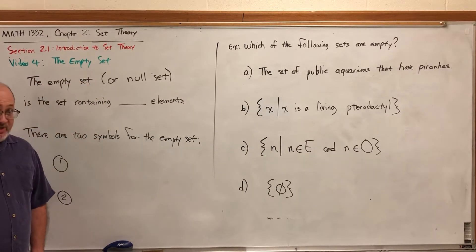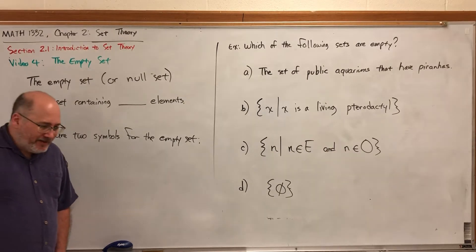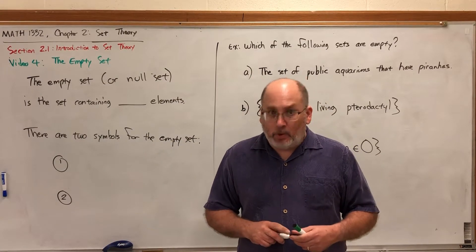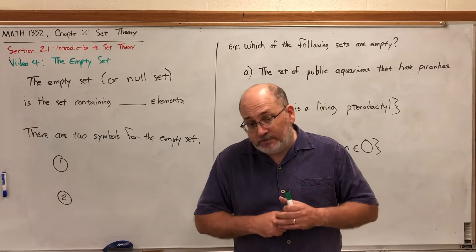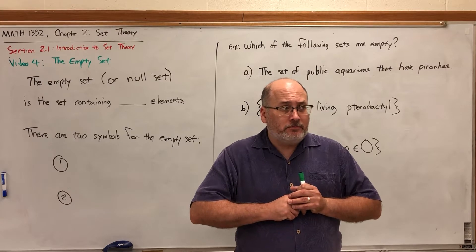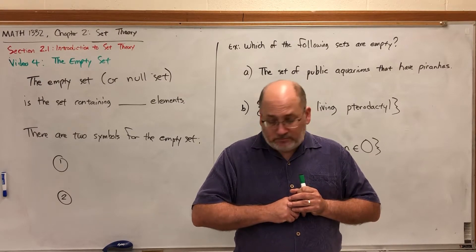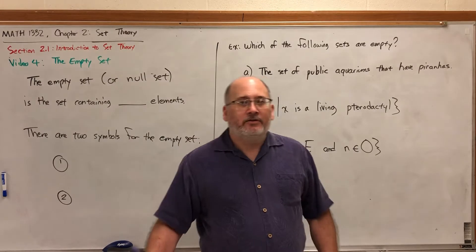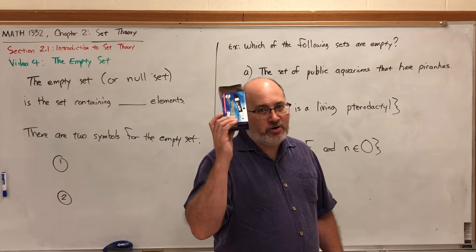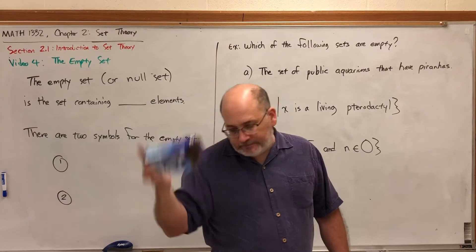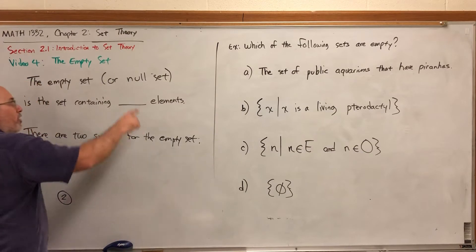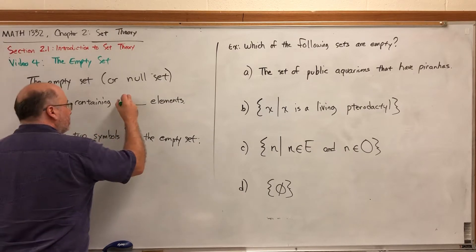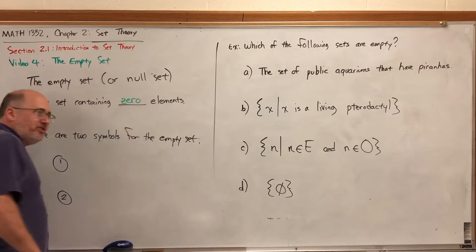In this video we're going to talk about one special set called the Empty Set. The Empty Set is exactly what it sounds like. What do you think it means for a set to be empty? Well, a set is a collection of objects. If that set is empty, how many objects would you expect to be in it? If this box were a set of markers and it's empty, how many markers are in it? None. The Empty Set — also called the Null Set — is the set containing zero elements. It is literally empty; it has nothing in it.